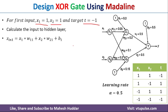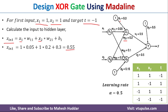We need to calculate the net input at each neuron. The net input at Z1 is: Z1_in = X1·W11 + X2·W21 + B1. Substituting the values: X1 = 1, W11 = 0.5, X2 = 1, W21 = 0.2, and B1 = 0.3, we get Z1_in = 0.55.